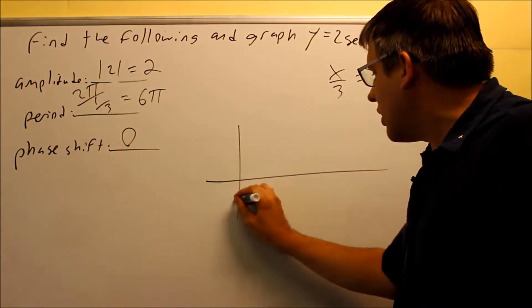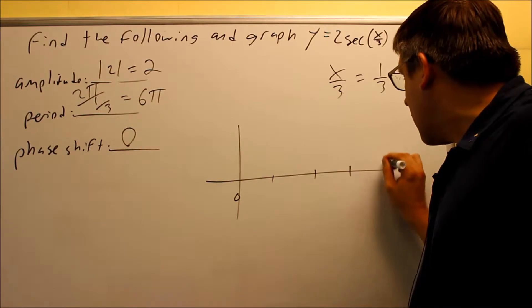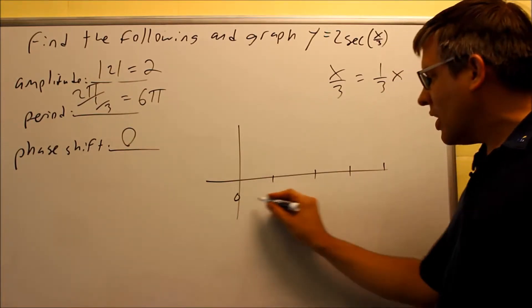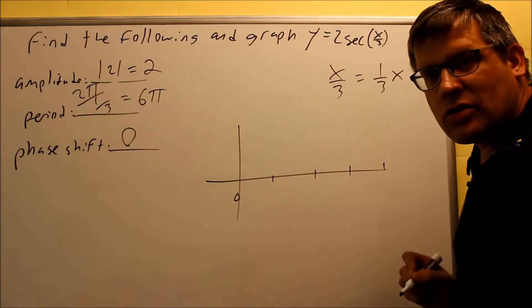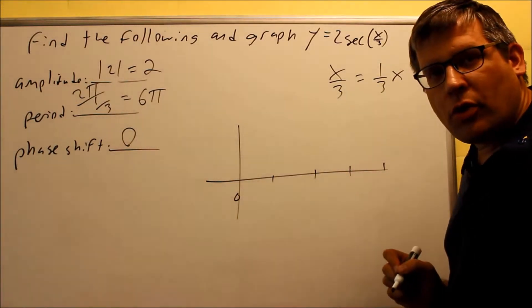So again, I know that the graph starts here at 0, and I've got to find four other spots here. And it's going to take me all the way over to 6π. So I have to find out what each of these spaces are going to be. To do that, I need to find my quarter points.